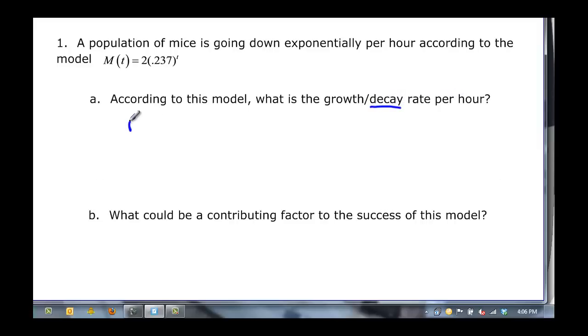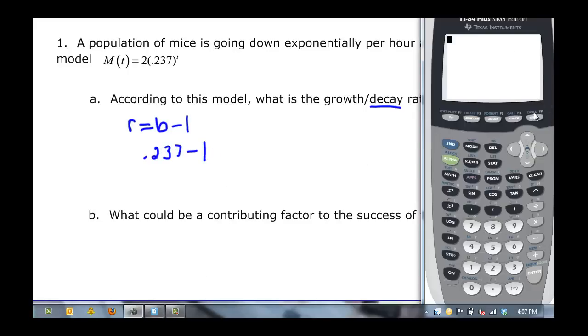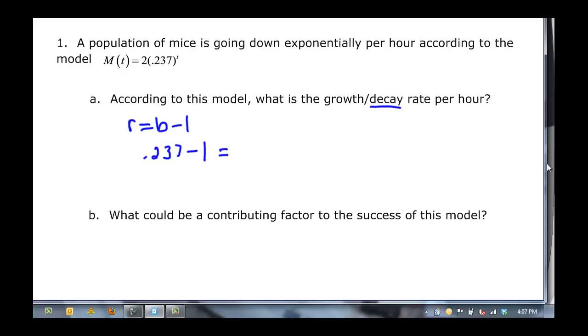Remember that rate equals the base minus 1. So if we have 0.237 as our base minus 1, using the calculator, 0.237 minus 1 is going to be negative.